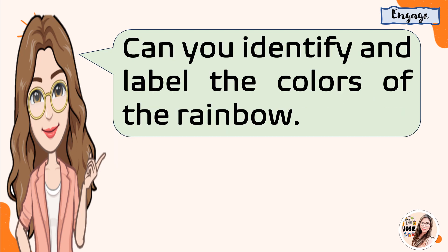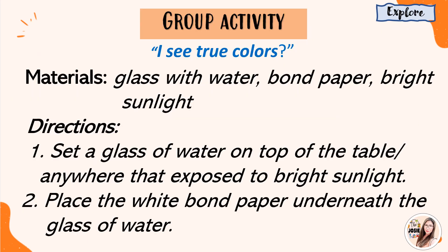Can you identify and label the colors of the rainbow? Let's have a group activity entitled "I See True Colors." Here are the materials: glass with water, bond paper, and bright sunlight. First, set a glass of water on top of the table or anywhere exposed to bright sunlight.